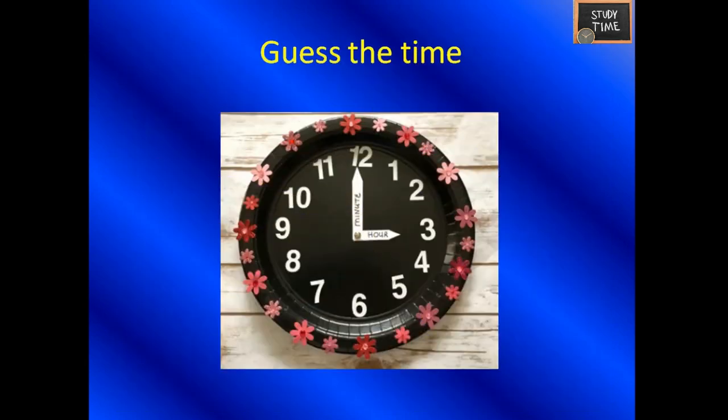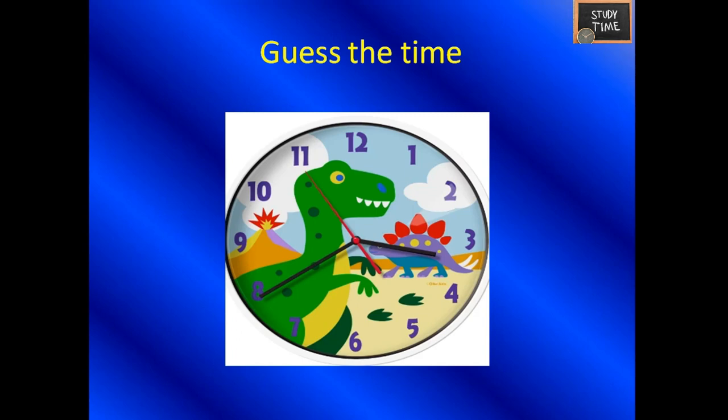Let's guess the time. The first clock shows exactly 3 o'clock. In the next clock, the short hand is pointing between 3 and 4, so the hour is 3. The long hand points to 8, which corresponds to 40 minutes. So the time is 3:40.